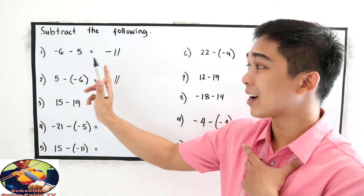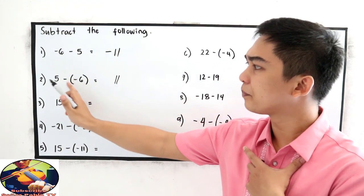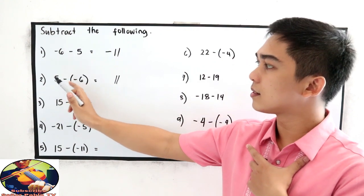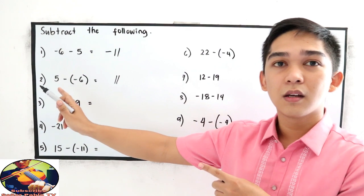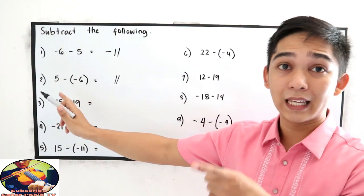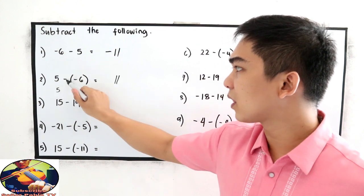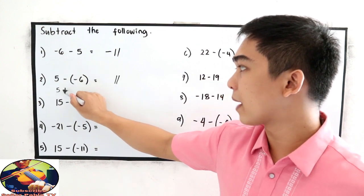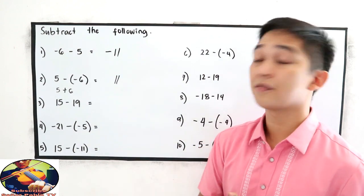So the shortcut in subtraction is, if the two consecutive signs are negative, then I can use the multiplication technique. So that will become 5, negative times negative, positive 6. So 5 plus 6 is positive 11.